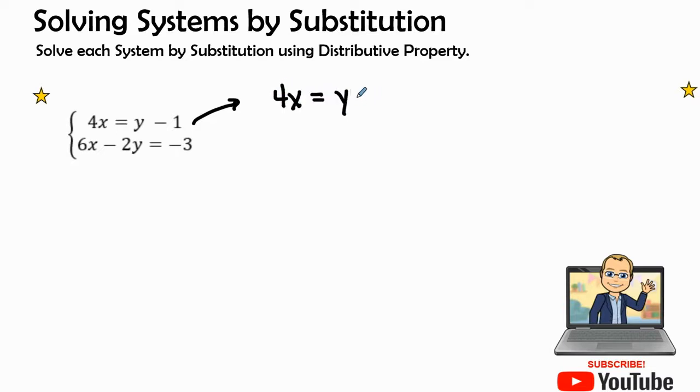So I have 4x equals y minus one. When I add a positive one to both sides I then have y equals 4x plus one. Here is the isolation of the variable y and I have the expression which is 4x plus one. Let's go ahead and plug that expression into our next equation.